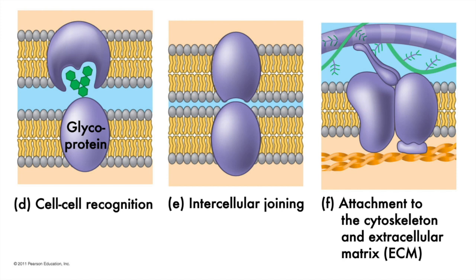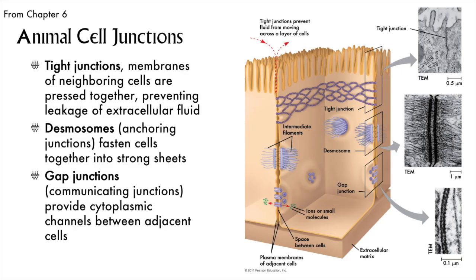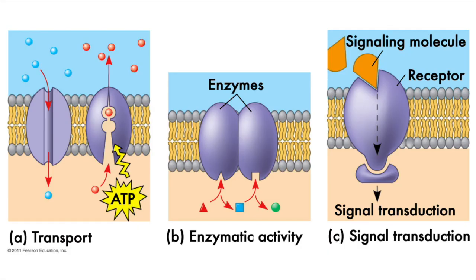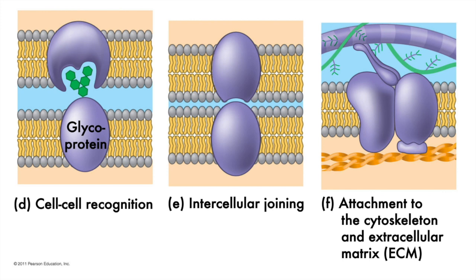In our house analogy, glycoproteins act like the numbers outside that identify our homes. Proteins can also function to join cells together — we saw this back at the end of chapter 6. Tight junctions and desmosomes serve to knit groups of cells together into tissues so they can function together, and this intercellular joining is achieved by membrane-bound proteins. Gap junctions are made of transport proteins. The last function of membrane-bound proteins is another familiar one from the end of chapter 6: the anchorage points for the cytoskeleton and the extracellular matrix.